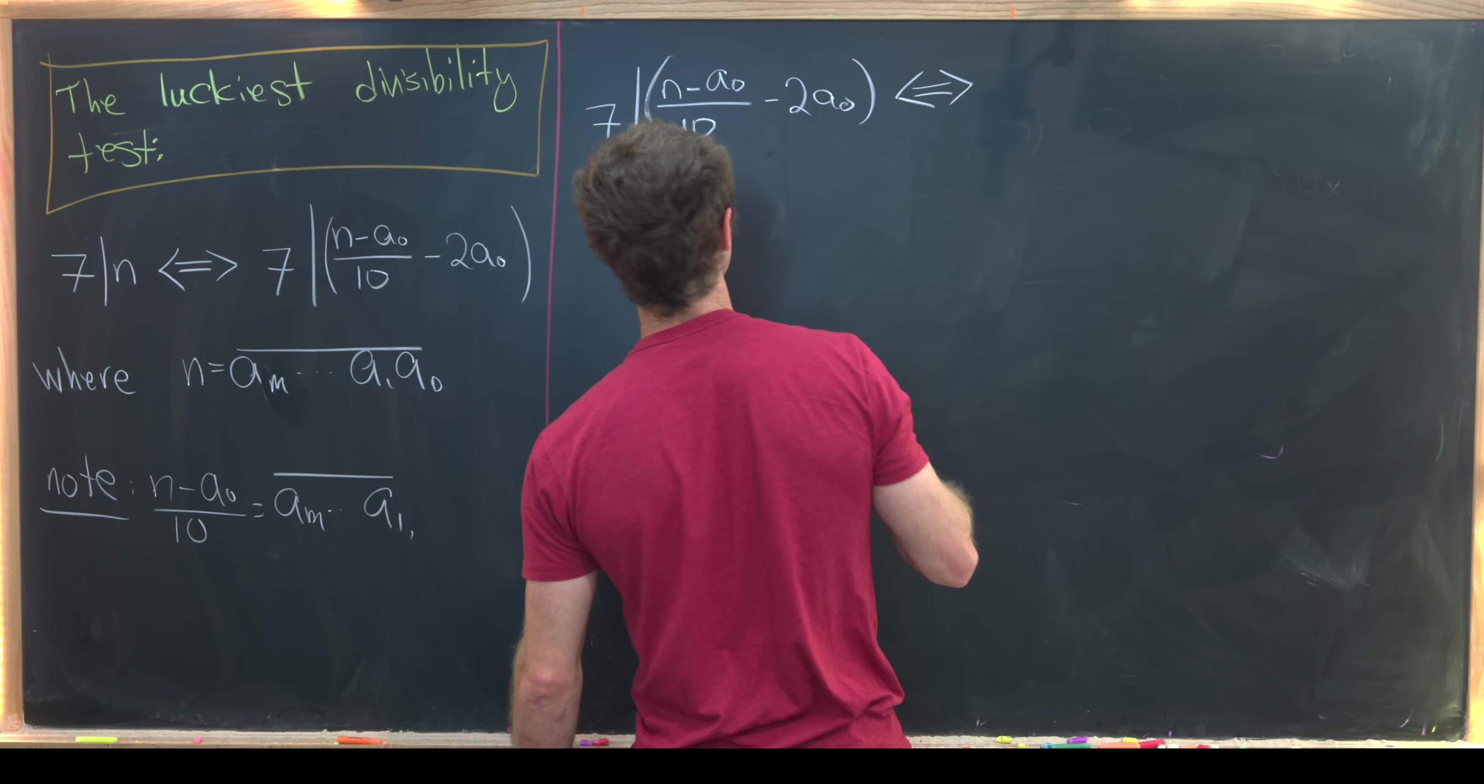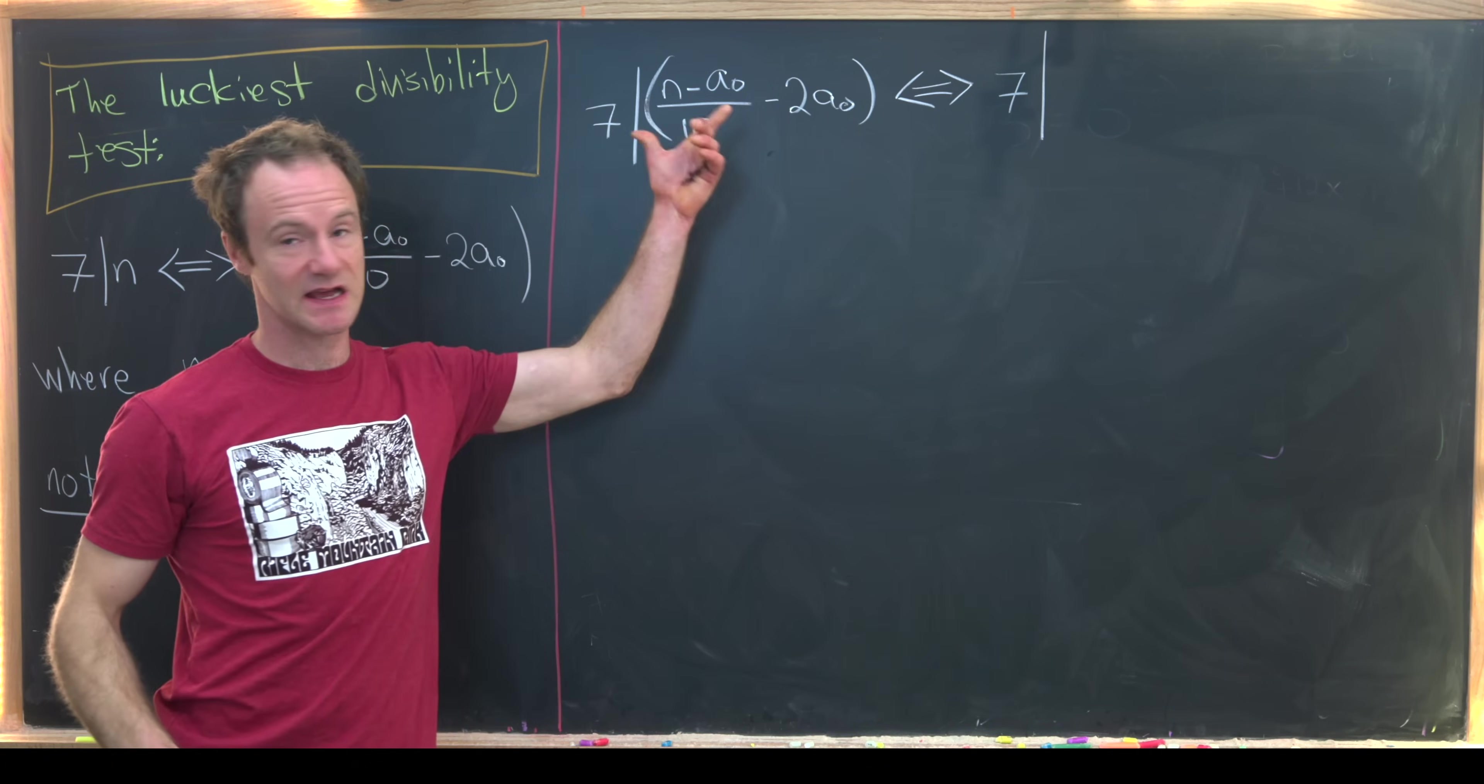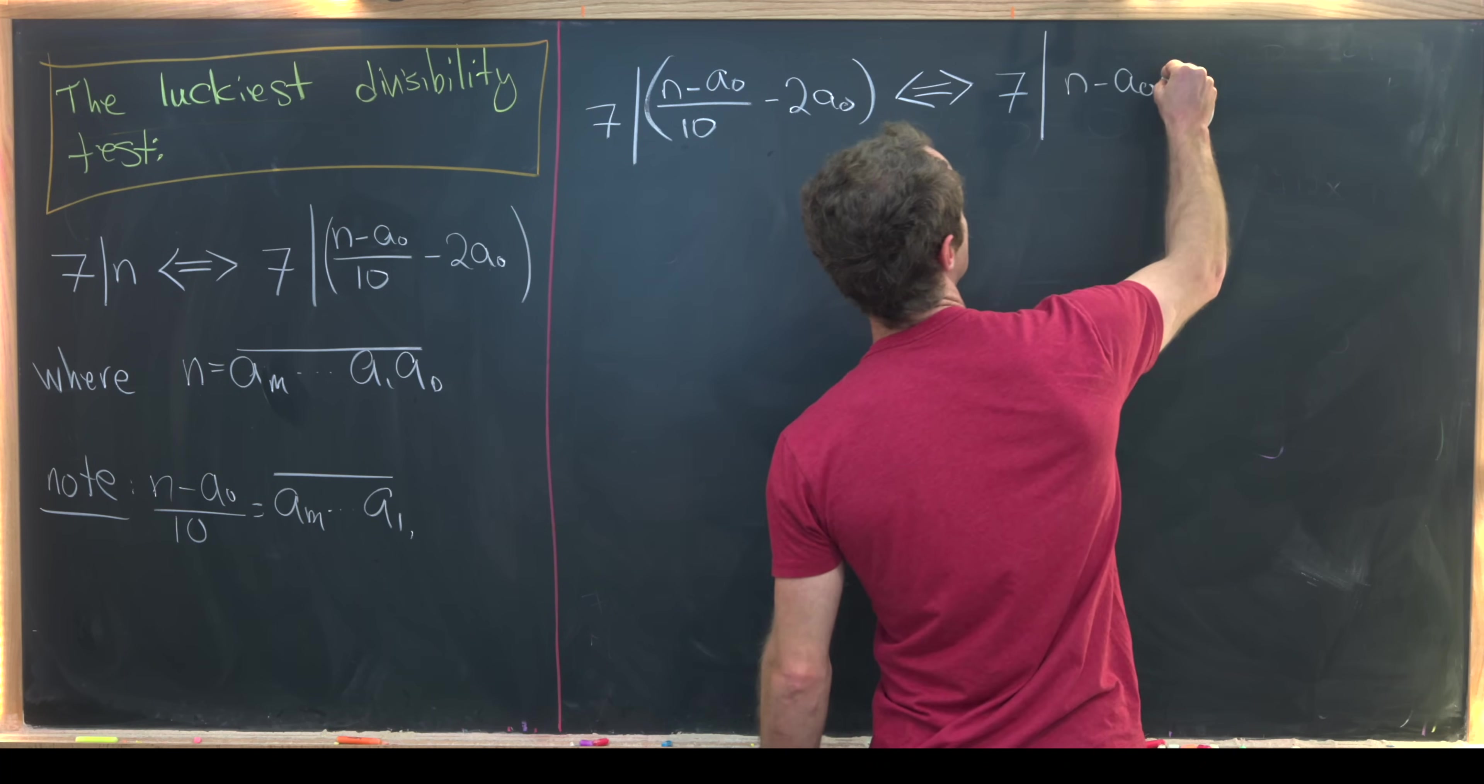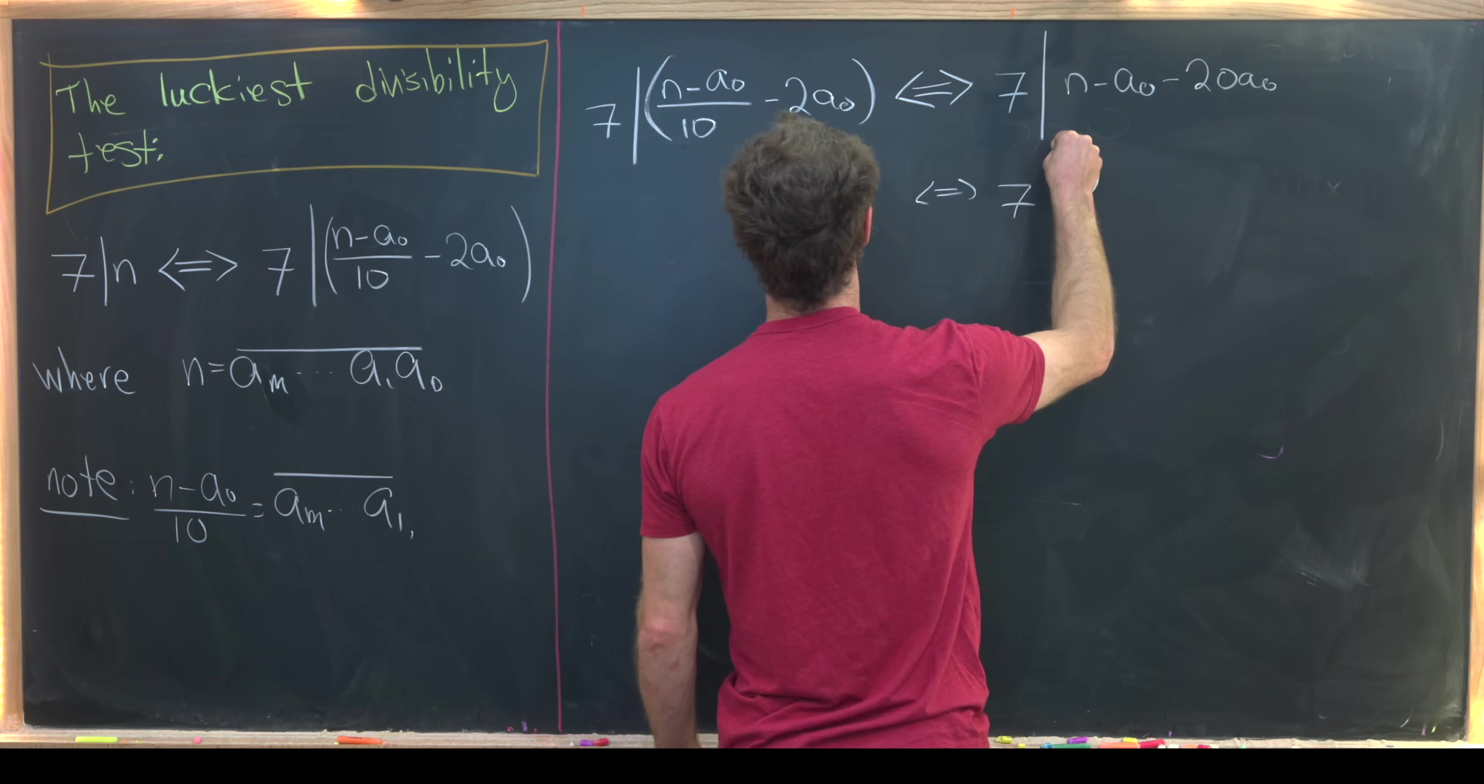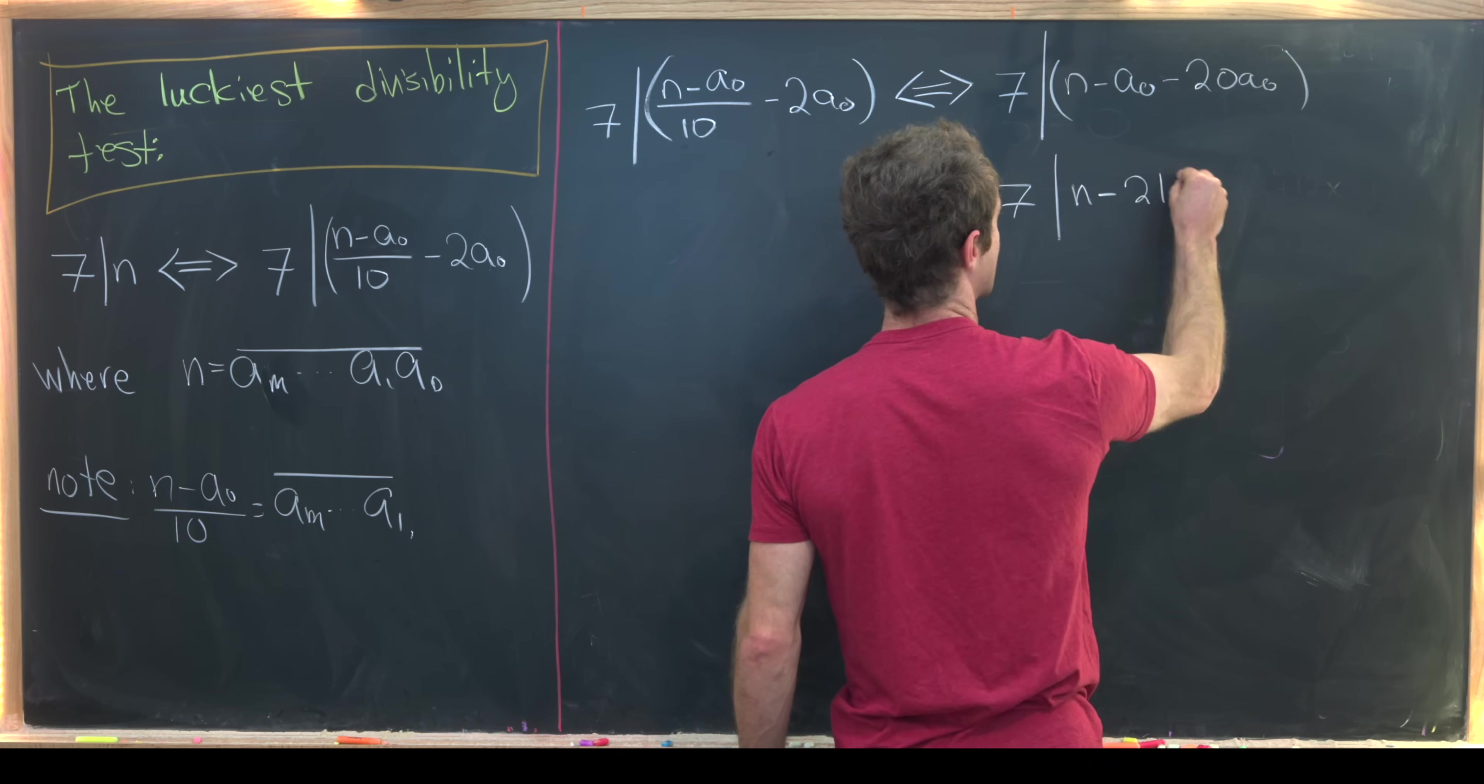So I'll write it like this. This is if and only if seven divides, like I said, 10 times this, which is n minus a naught minus 20a naught. But notice we can put those things together and see that that means that seven divides n minus 21a naught.